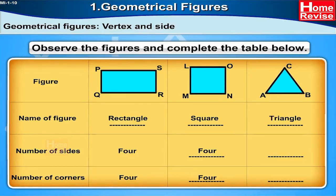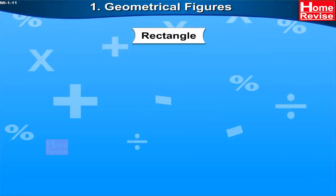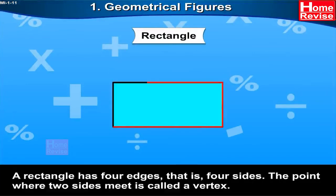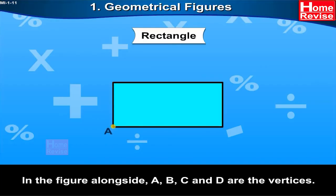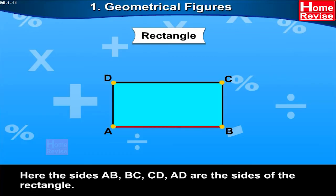A rectangle has four sides. The point where two sides meet is called a vertex. In the figure, A, B, C, and D are the vertices. The sides AB, BC, CD, and AD are the sides of the rectangle.